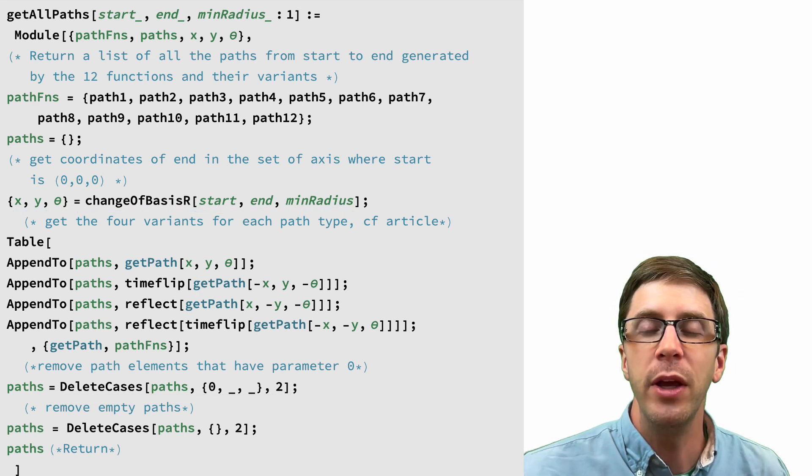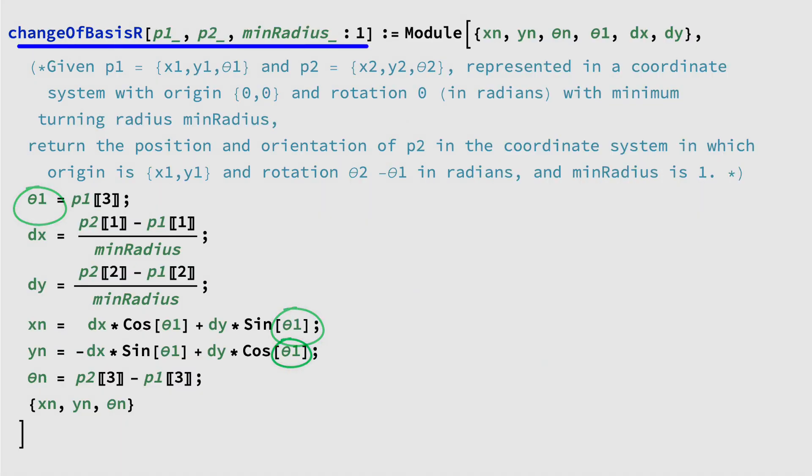To simplify, we use the reference frame of the green car, and the relative displacement is xy phi. We also divide the distances by rmin, so we can solve in a reference frame where all the turns have radius 1.